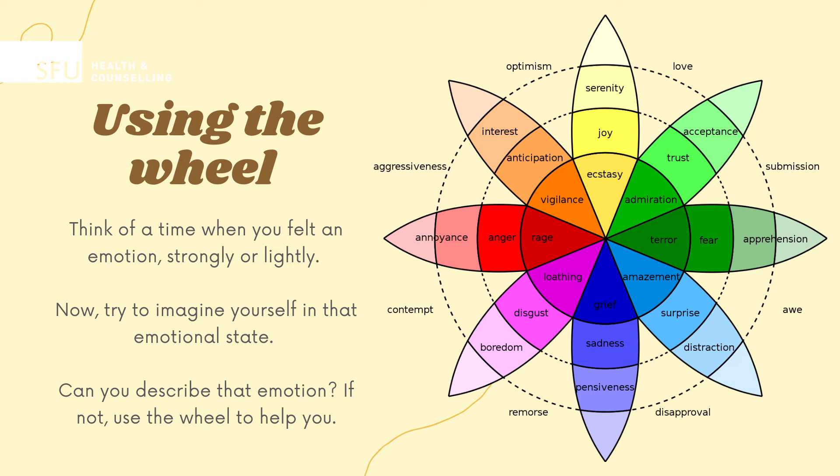As you move towards the center of the wheel, the emotions become more intense. This can also be noted by the intensity of the color — the darker the shade, the more intense the emotion.